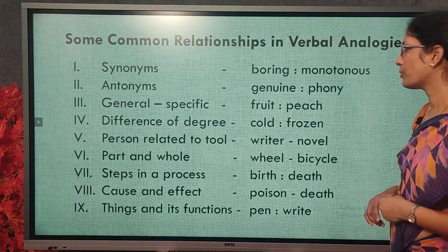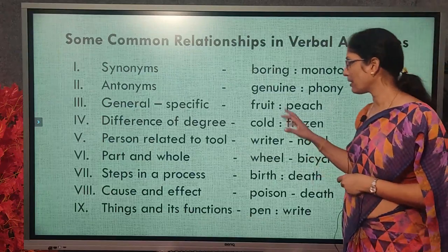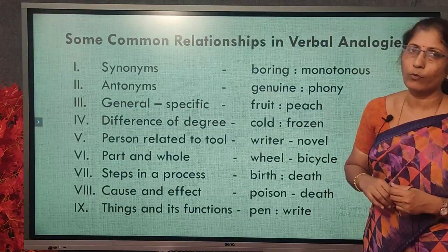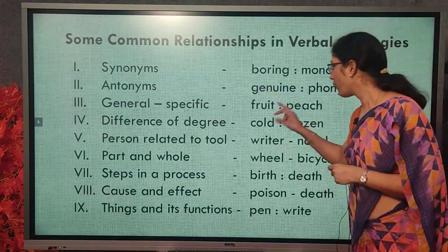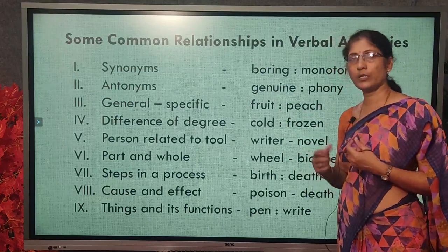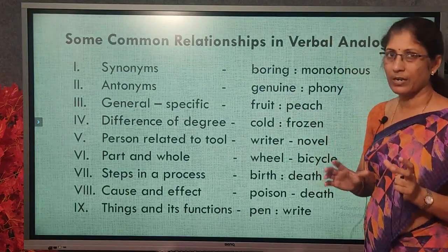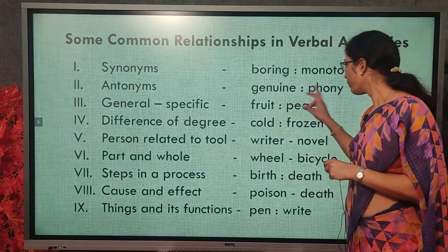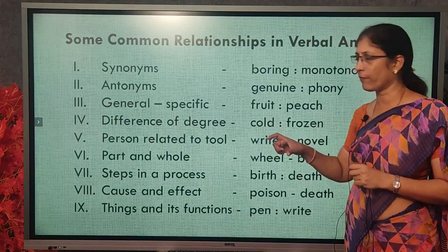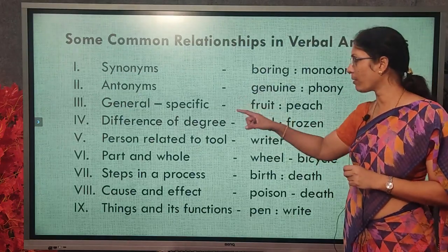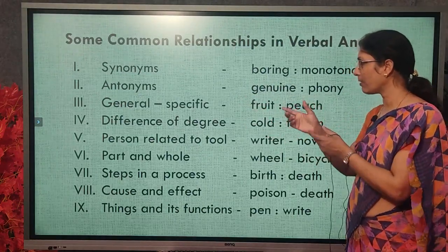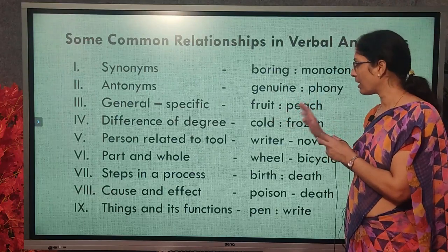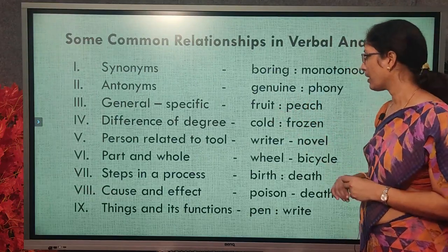Another type is general to specific. 'Fruit' is a general word we use for any fruit, while 'peach' is a specific one. So the relation between the two words is general and a specific example. You can frame a sentence: a peach is a fruit.